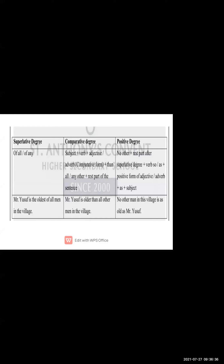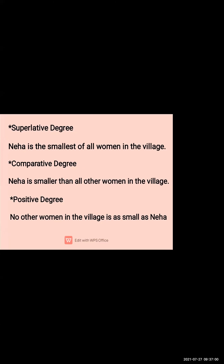Na toh older hoga, na toh oldest hoga. Positive degree uses only the main word — old, young, tall, sharp. Keep this in mind. If you write in a positive degree, it is always 'as tall as', 'as old as', 'as long as' — the word comes between 'as...as'. Remember this.